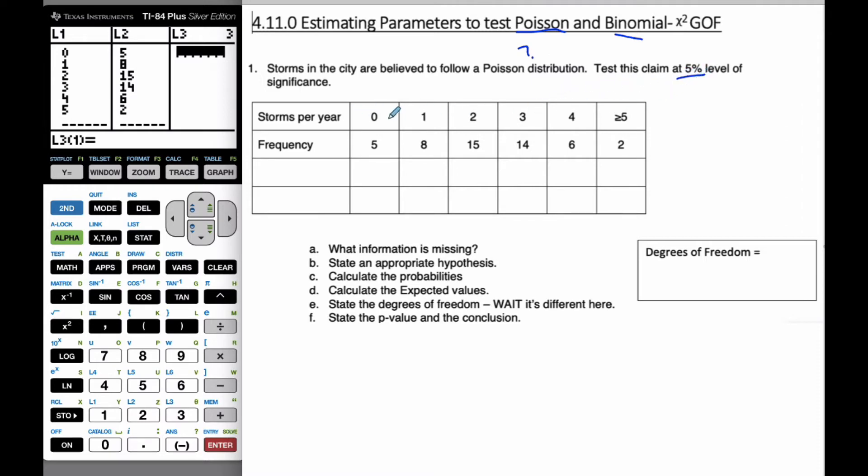So here's our storms and our frequencies. Okay, and so what is missing? Well, we do not know the mean or the variance, which are the same for Poisson. We don't know what this value is. So we have to go and find it.